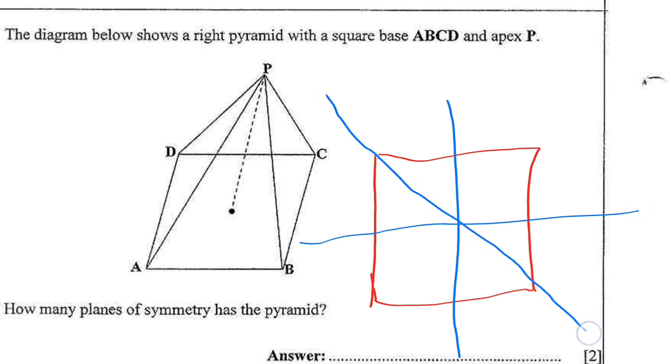It's a square, you can fold like this and still be equal. You can also fold like this and still be equal. Let's now count. So this is one, two, three, four. So the answer here is four, four planes of symmetry.